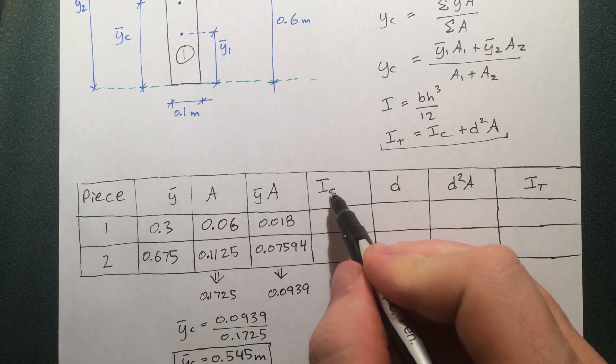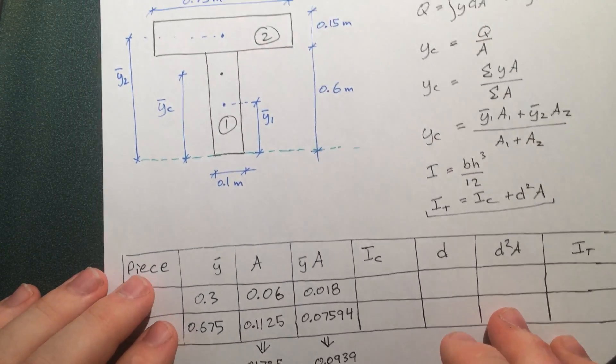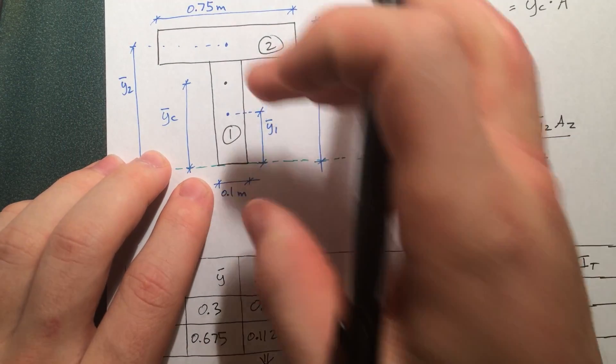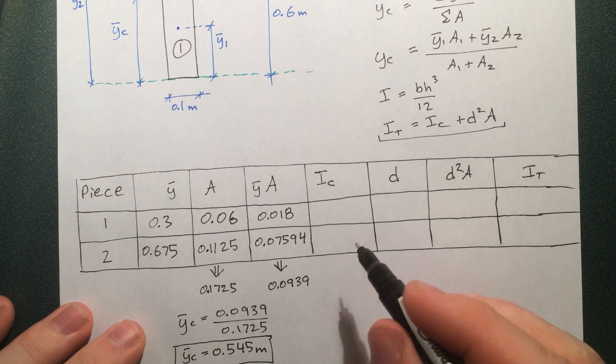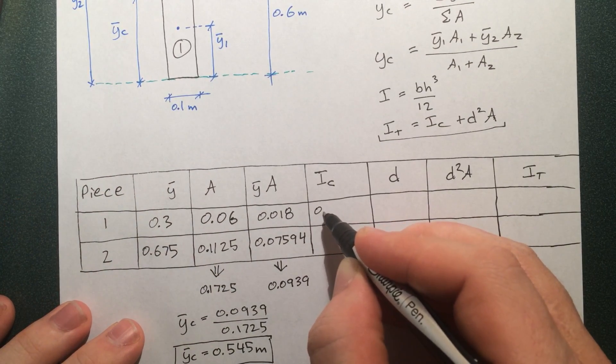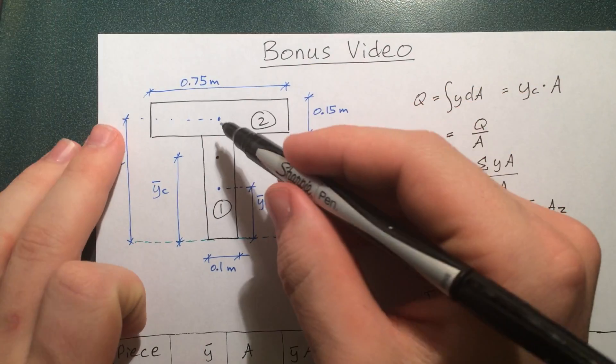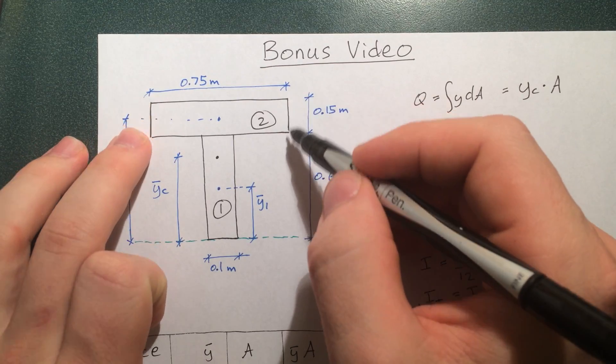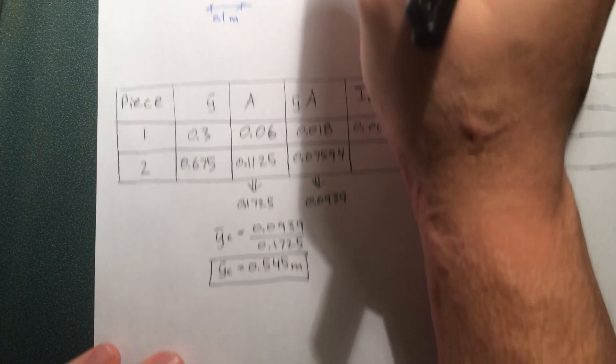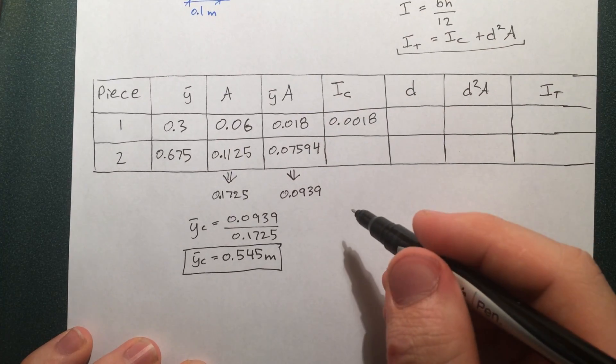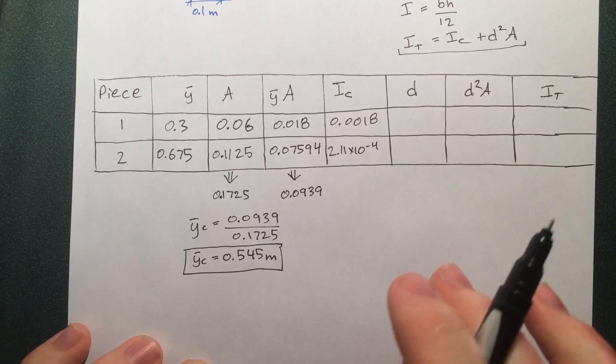The moment of inertia about its centroid is bh³/12. So just going through to solve that for piece one, b is this, h is this, so bh³/12 turns out to be the value shown. For the second piece, just about its centroid, b is of course this whole length now—the base length here—and then the height cubed by 12.